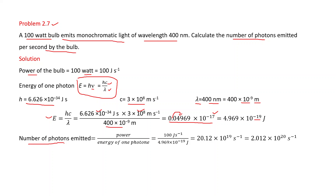Number of photons emitted per second = Power / Energy of one photon = 100 J/s ÷ 4.969 × 10⁻¹⁹ J. Solving this gives approximately 2.012 × 10²⁰ photons per second.